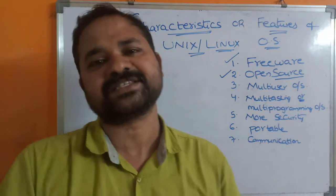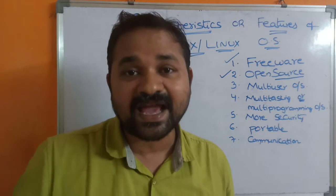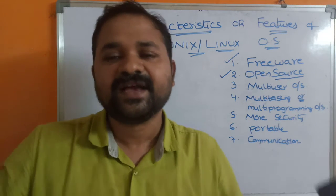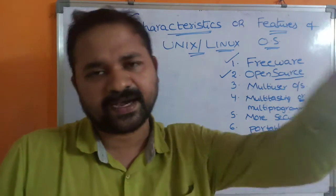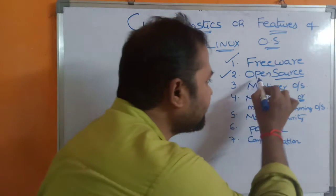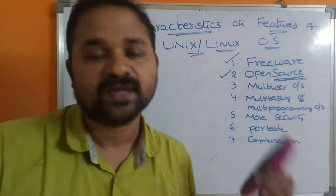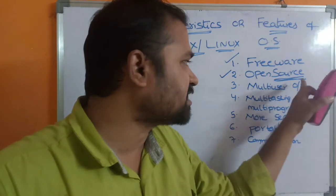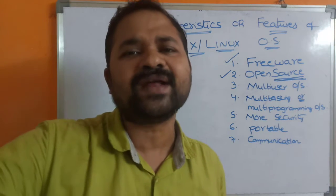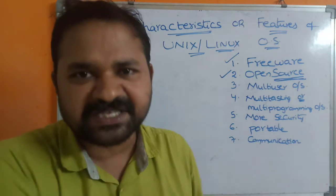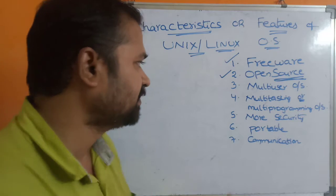We have several Linux operating systems — Red Hat Linux, IBM Linux, Infosys Linux — and everybody is customizing their own Linux operating system. That is why we say Unix or Linux is an open source operating system: the source code is openly available and we can do our own enhancements, customizations, and develop our own version.